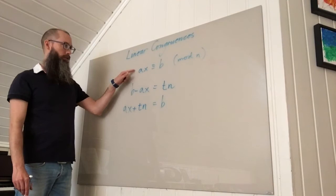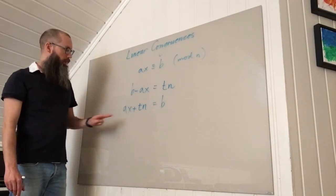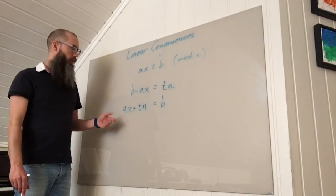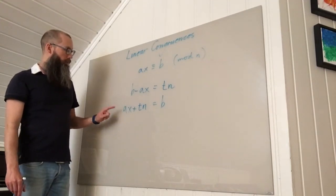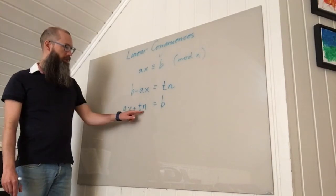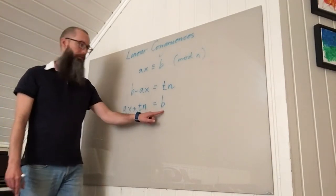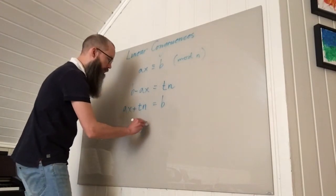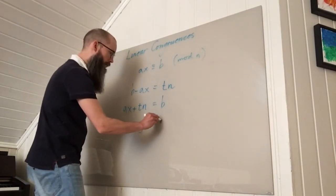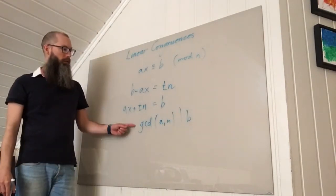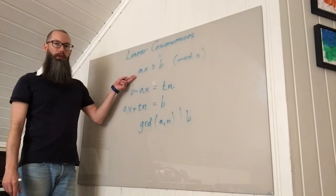Now we know exactly when these Diophantine equations have solutions. The greatest common divisor of the two coefficients here, a and n, has to divide b. So we have a solution to this one if and only if the GCD of a and n actually divides b. So this is the criterion for solutions to exist.